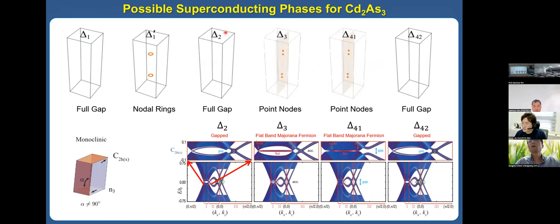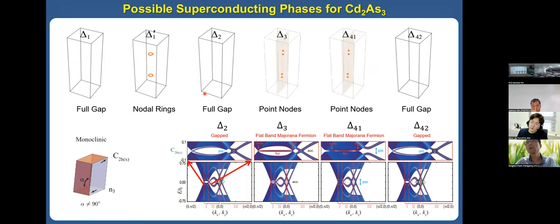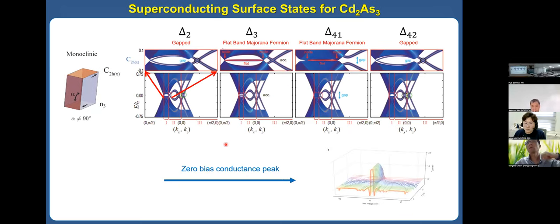We studied the possible superconducting phases for cadmium arsenide. There are six possible superconducting pairings. We can find fully-gapped superconductors, nodal superconductors with nodal links, or nodal superconductors with nodal points. Importantly, the Δ₂, Δ₃, and Δ₄₁/Δ₄₂ phases have a Majorana state on the boundary. However, Δ₁ and Δ₁′ phases do not have any Majorana state. We expect these four states should be observed in experiment, and we expect they can explain the zero-bias conductance peak observed experimentally.